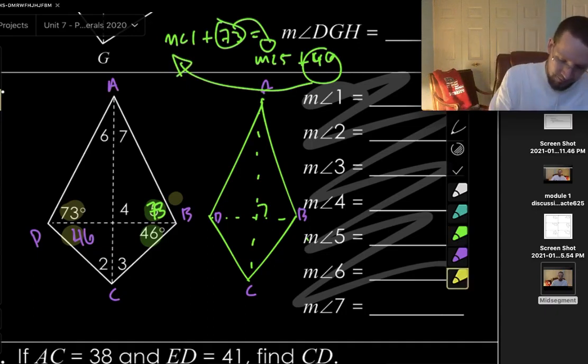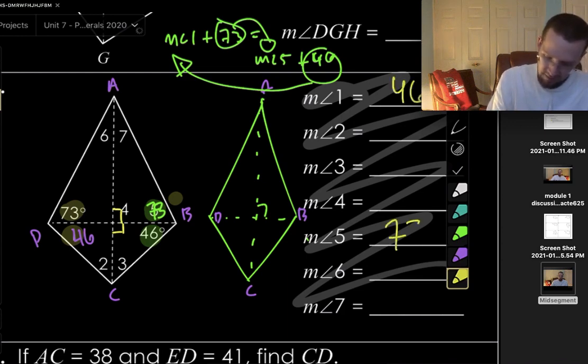So, once you see this, I think it becomes a very helpful tool to solving for angle measures. Now, we can move on to this angle. How about 4? We know. Okay, so what did we just find? We found 1, which was 46. And we found 5, which was 73.